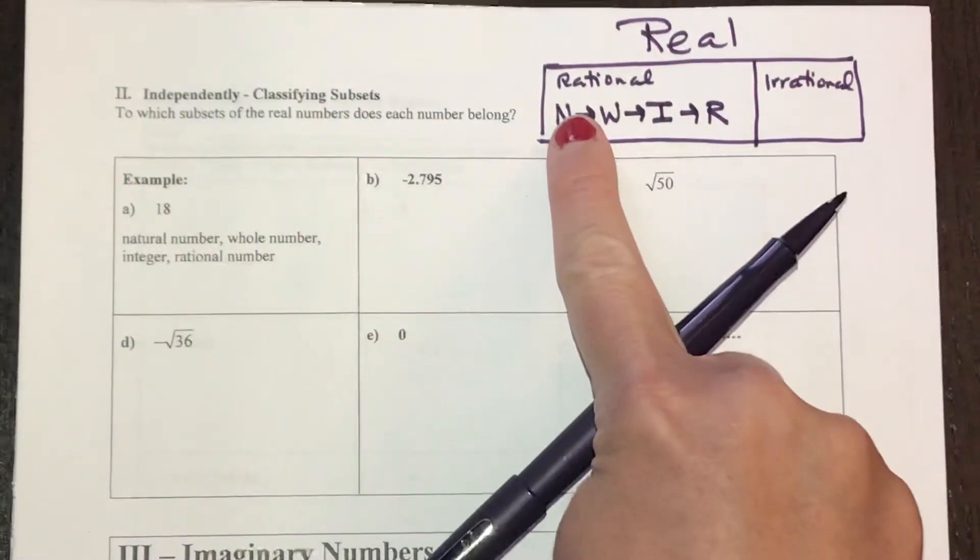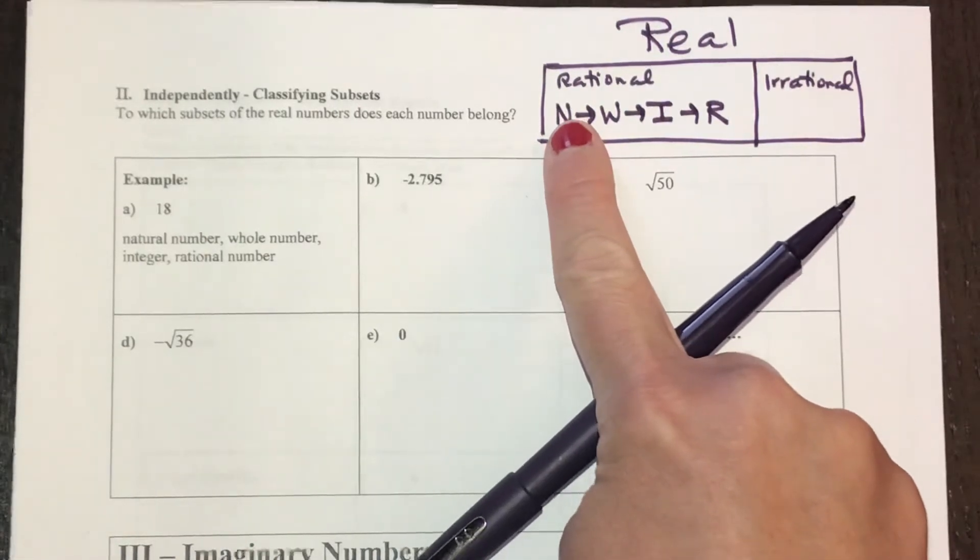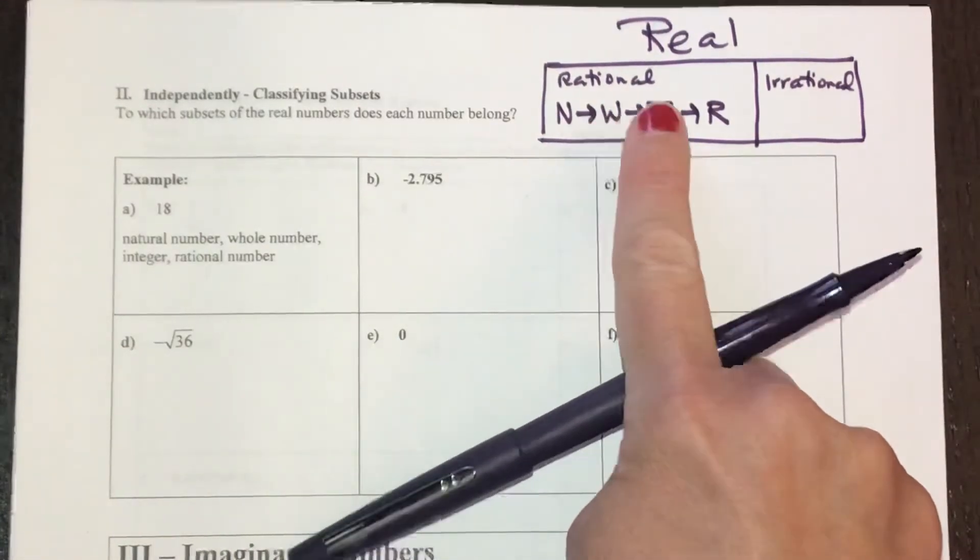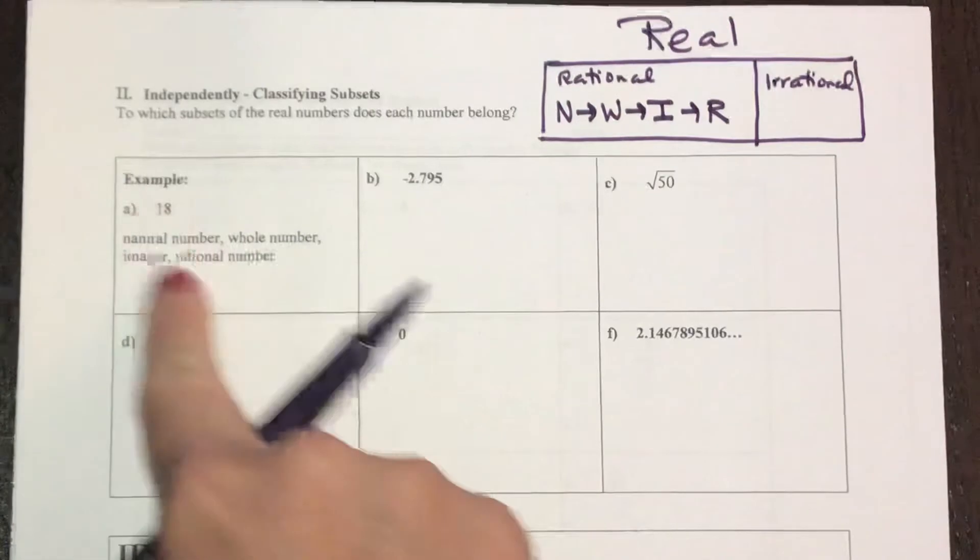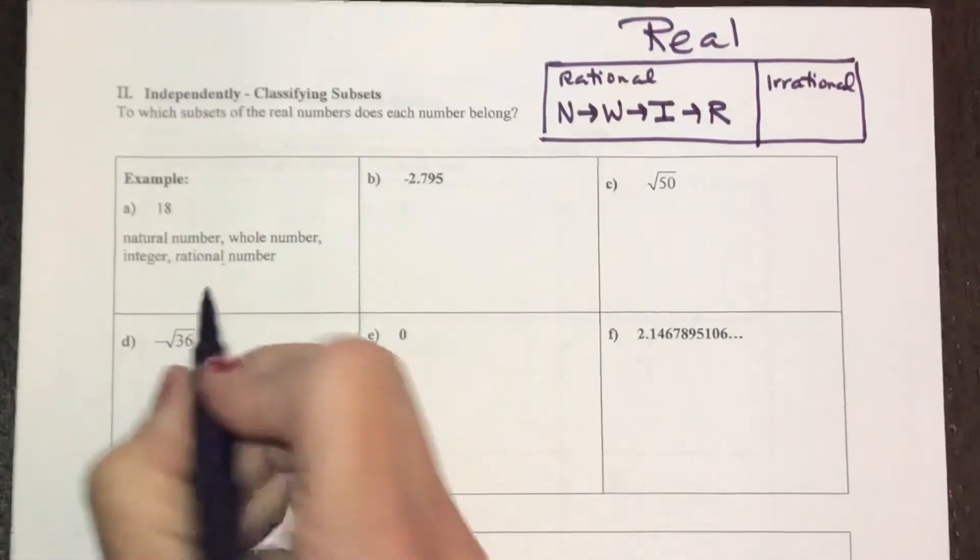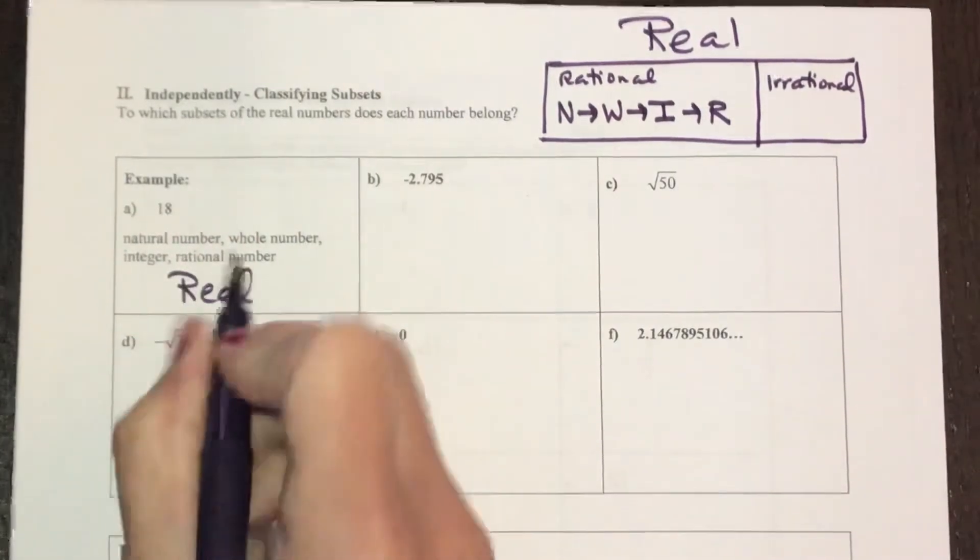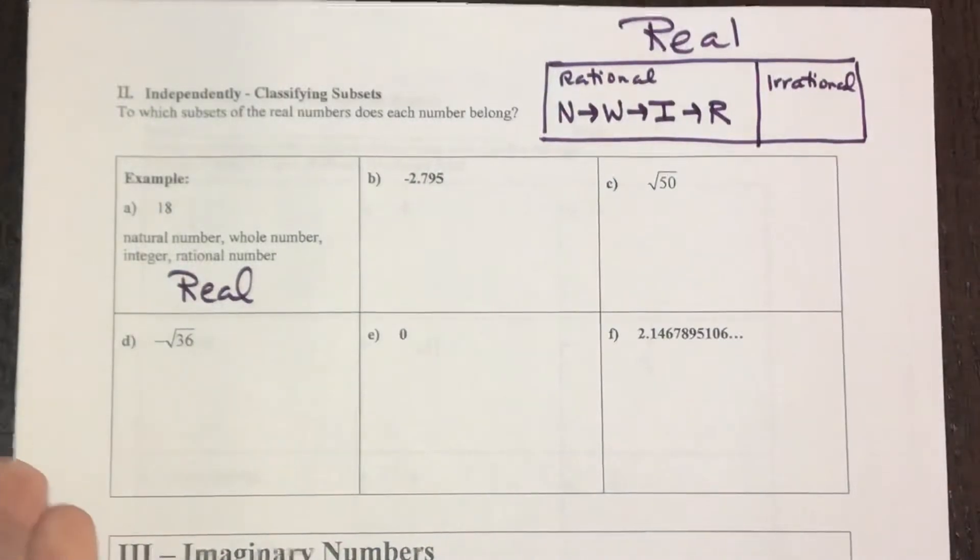Now 18 is a natural number, which means I also have to classify it as whole and integer and rational, and that's what was done here. Don't forget to also call this a real number because we know what that is. It's a real number, it's 18. You could have like $18 in your pocket.